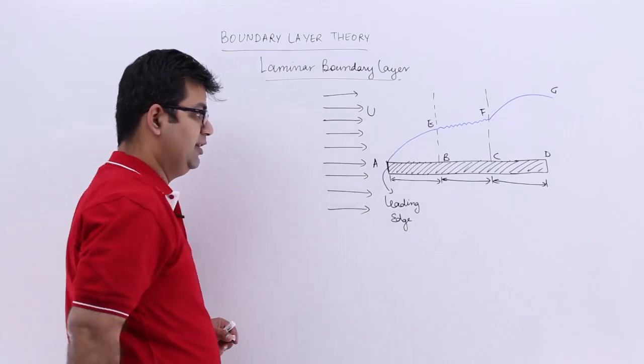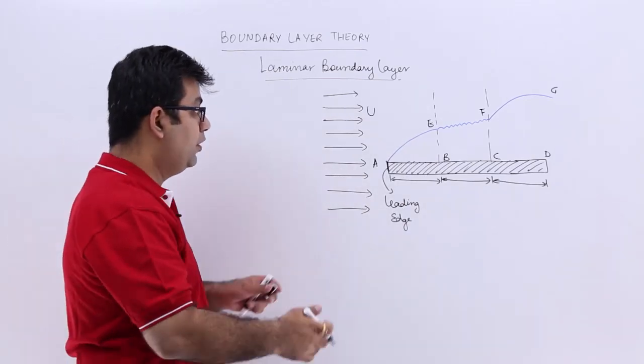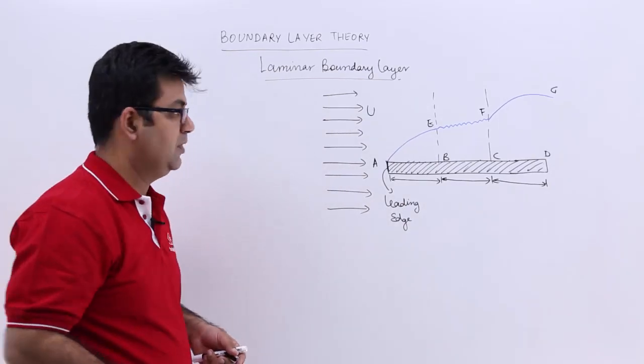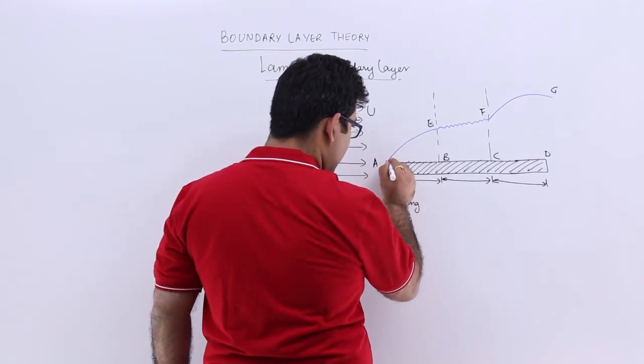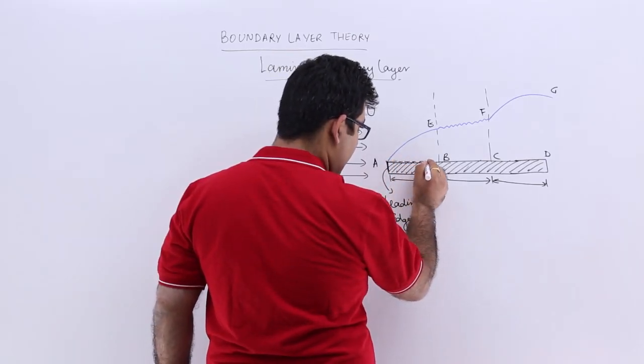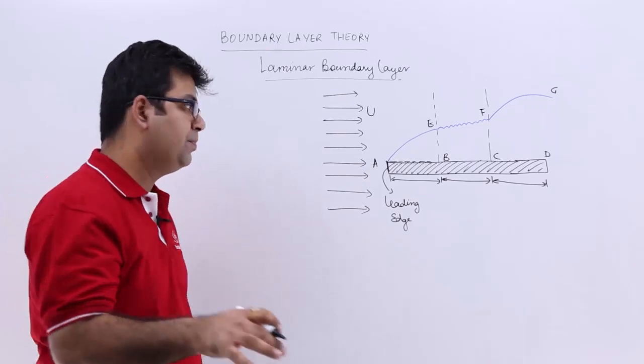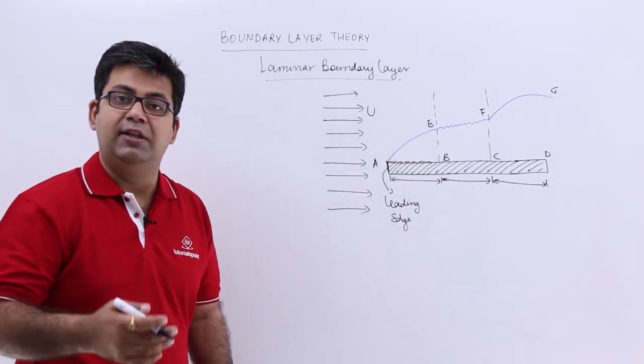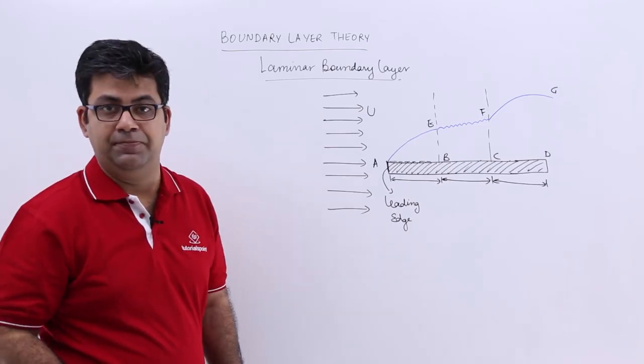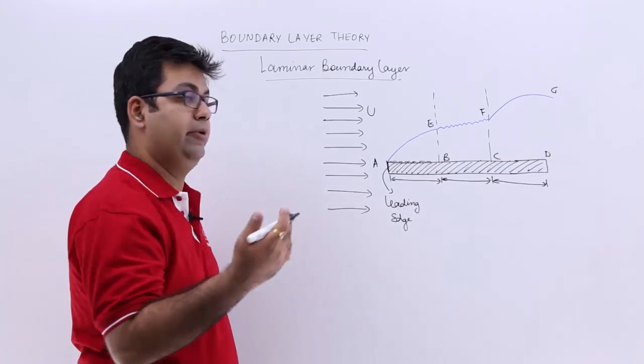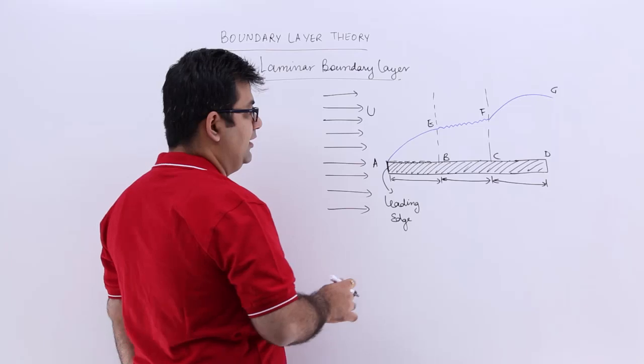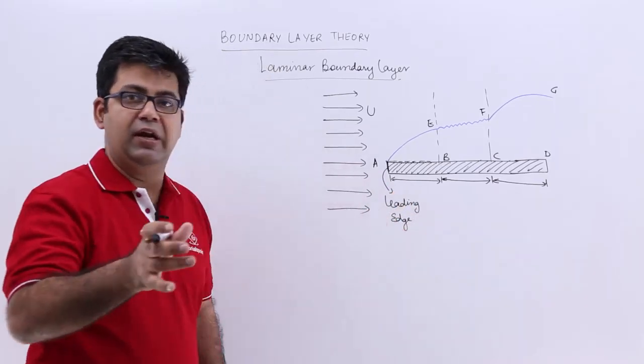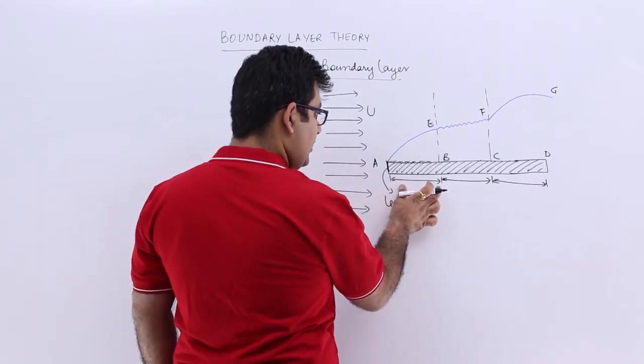When this fluid touches the leading edge, the boundary layer starts to form. The layer just next to the plate will have its velocity zero, and as you start going away from the plate, the velocity gradients are set up.